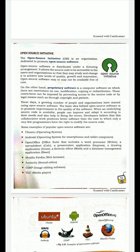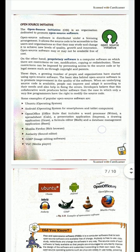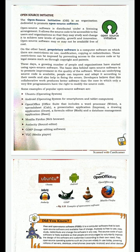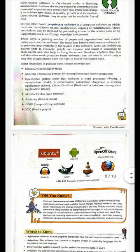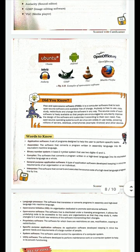Some popular examples of open source software are: Ubuntu operating system, Android operating system for smartphones and tablet computers, OpenOffice, Mozilla Firefox web browser, Audacity sound editor, GIMP image editing software, VLC media player, and others. All these are examples of open source software as shown in the figure.